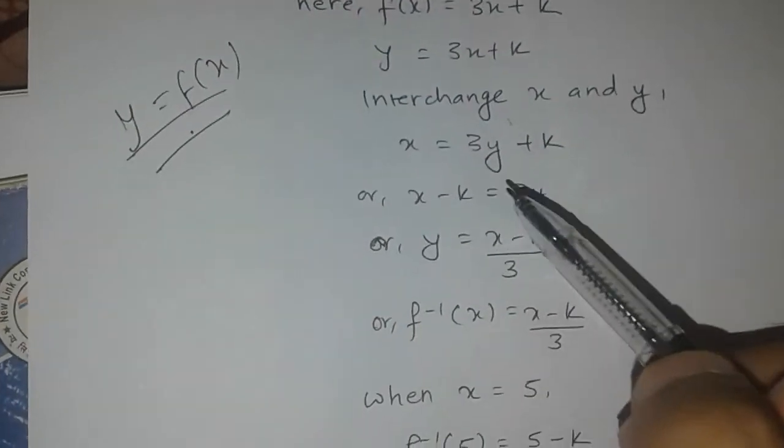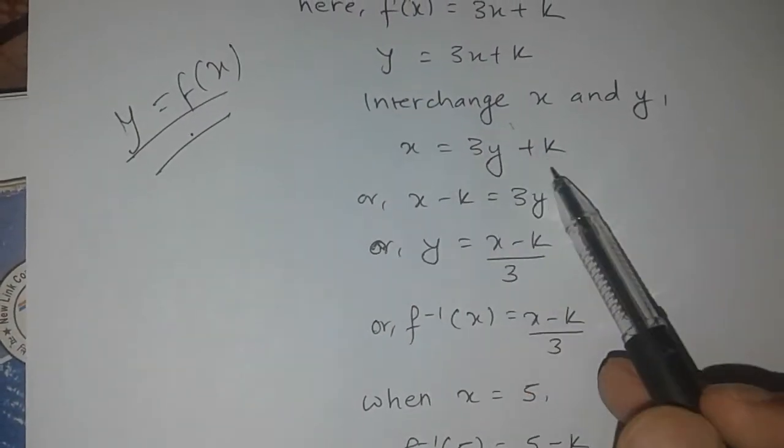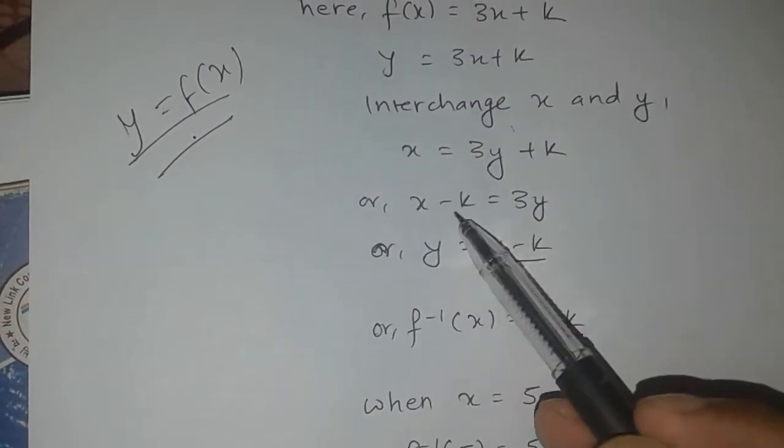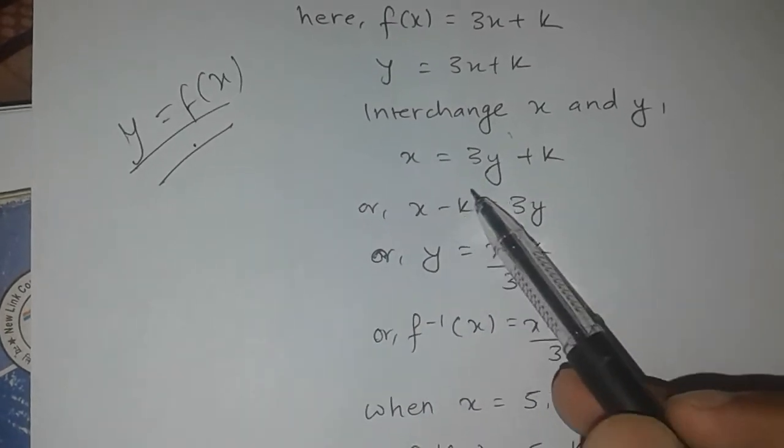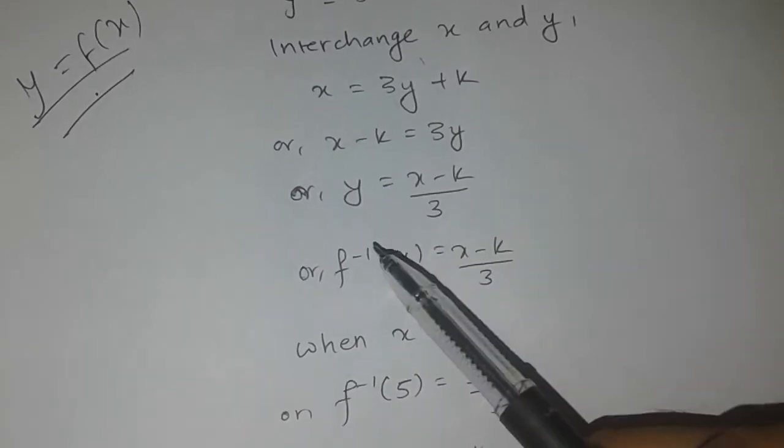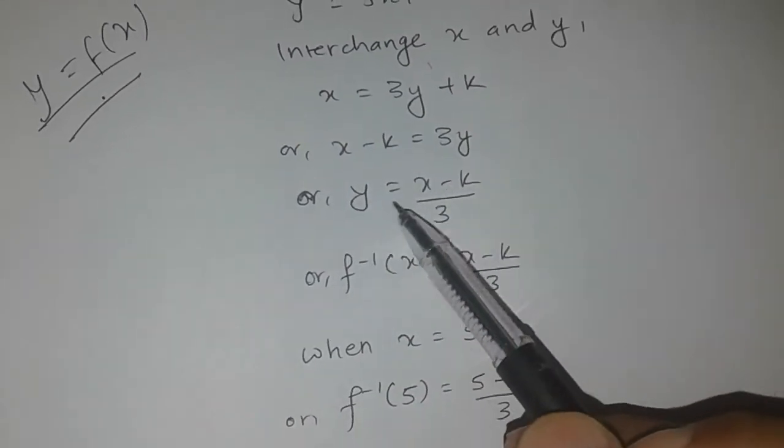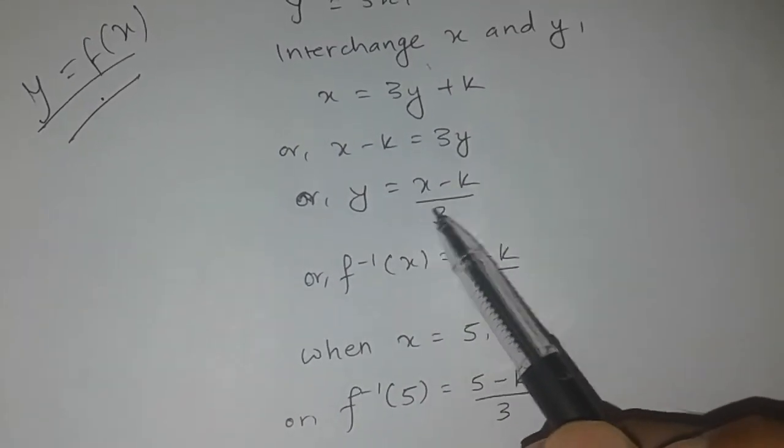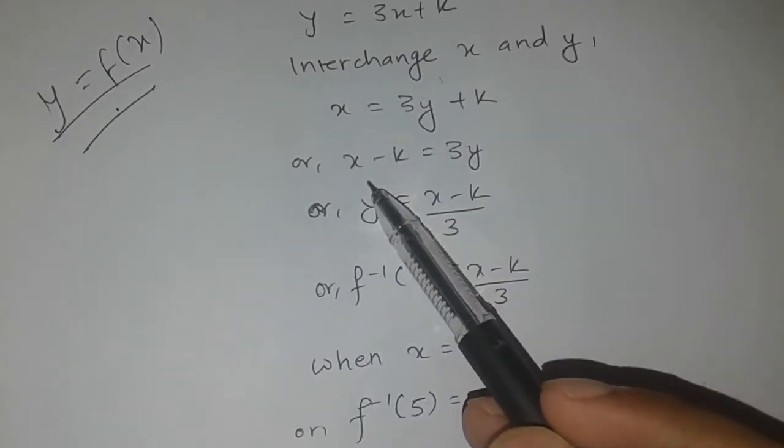Solving for y: x minus k equals 3y, so y equals x minus k divided by 3. Therefore, f inverse of x equals x minus k divided by 3.